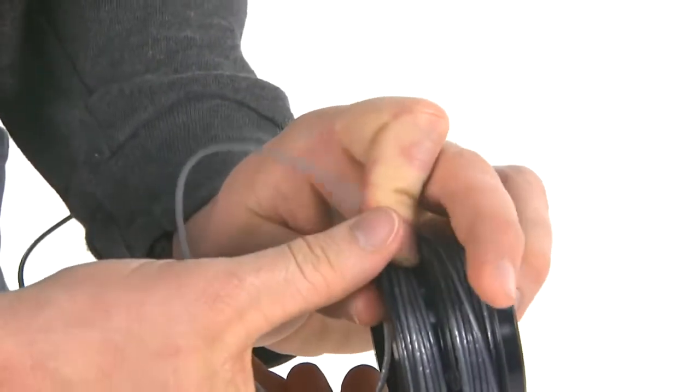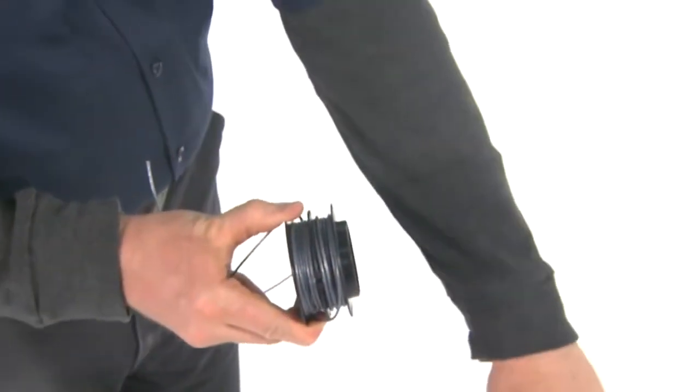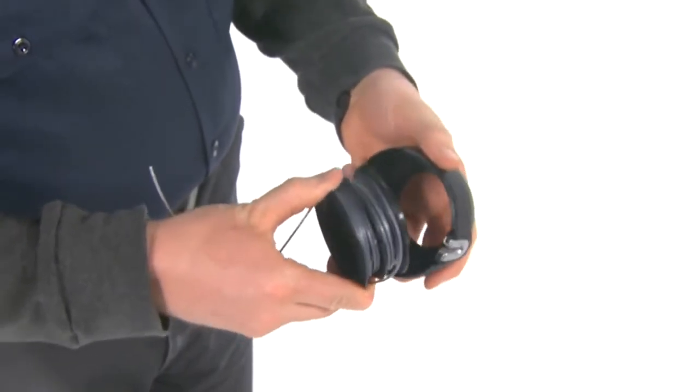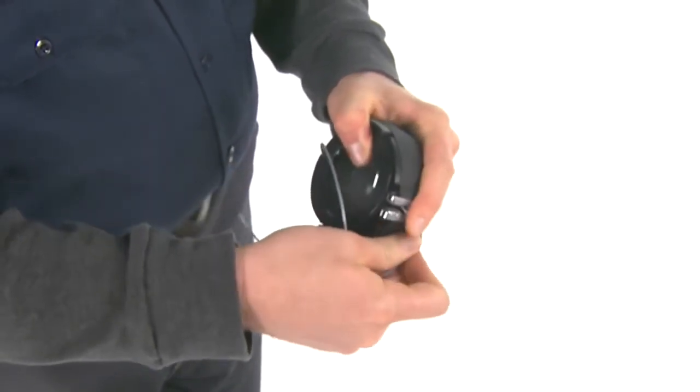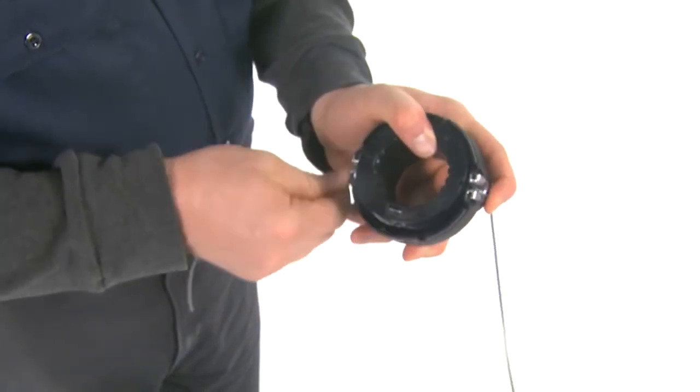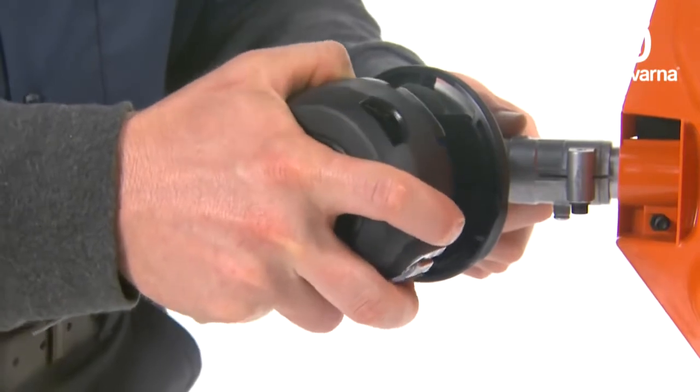Next, insert the spool into the body and pull the line into the metal eyelet openings. Now, reattach the head to the trimmer.